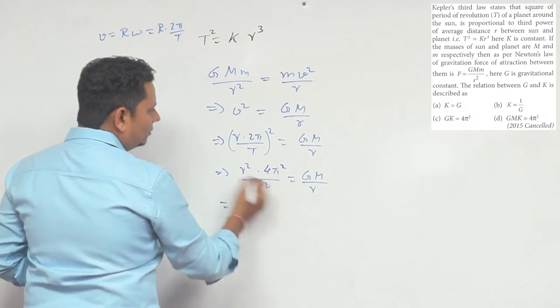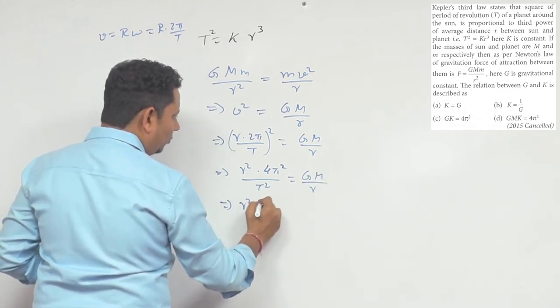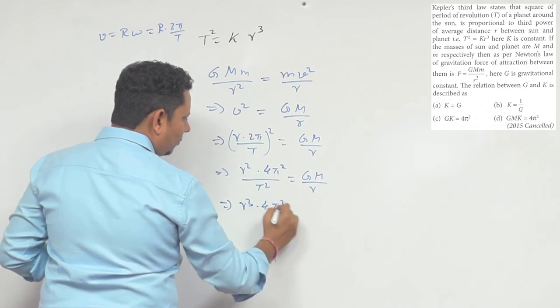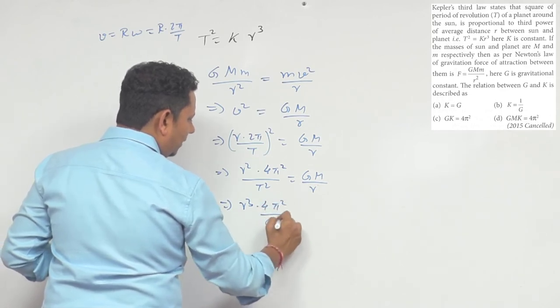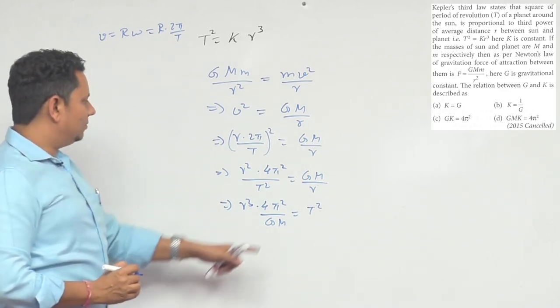Is r ko agar aap udhar le aaye, so this will be T² le jaaye, so this will be: r³ × 4π²/GM = T². Ye apni equation ho jayegi.